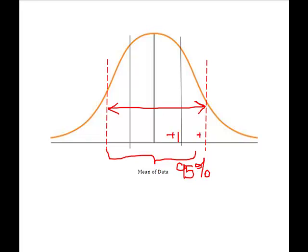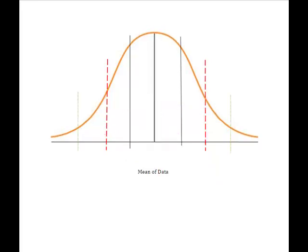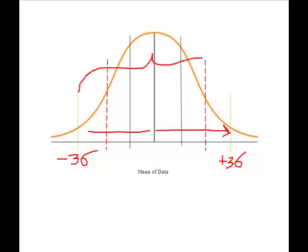When I move out one more standard deviation — plus or minus two standard deviations from the mean — I end up capturing 95% of my data every single time. Going even further out to plus or minus three standard deviations from the mean, I will have 99.7% of my data.